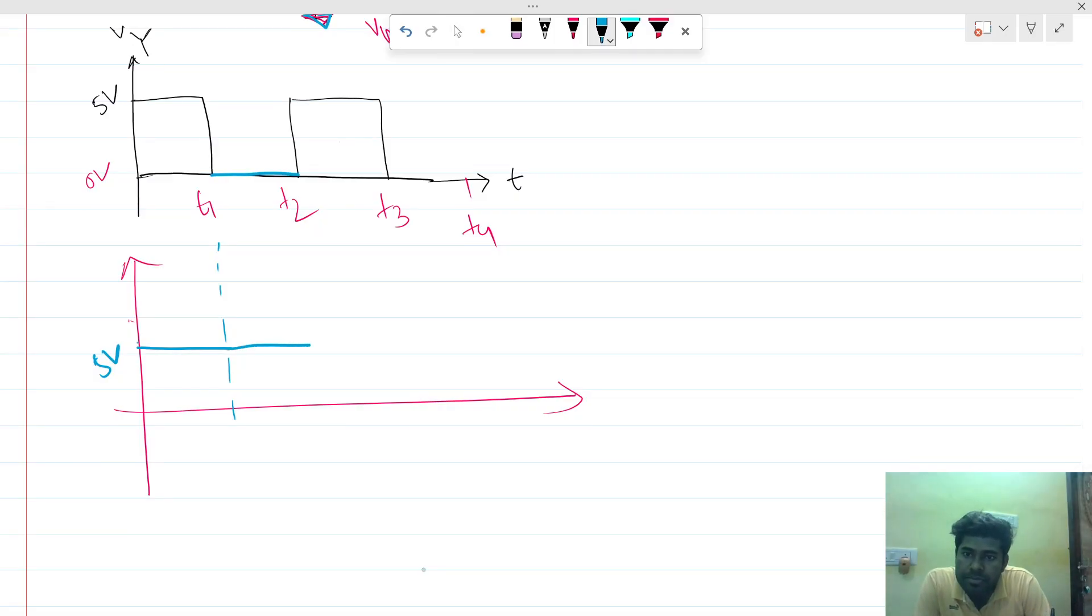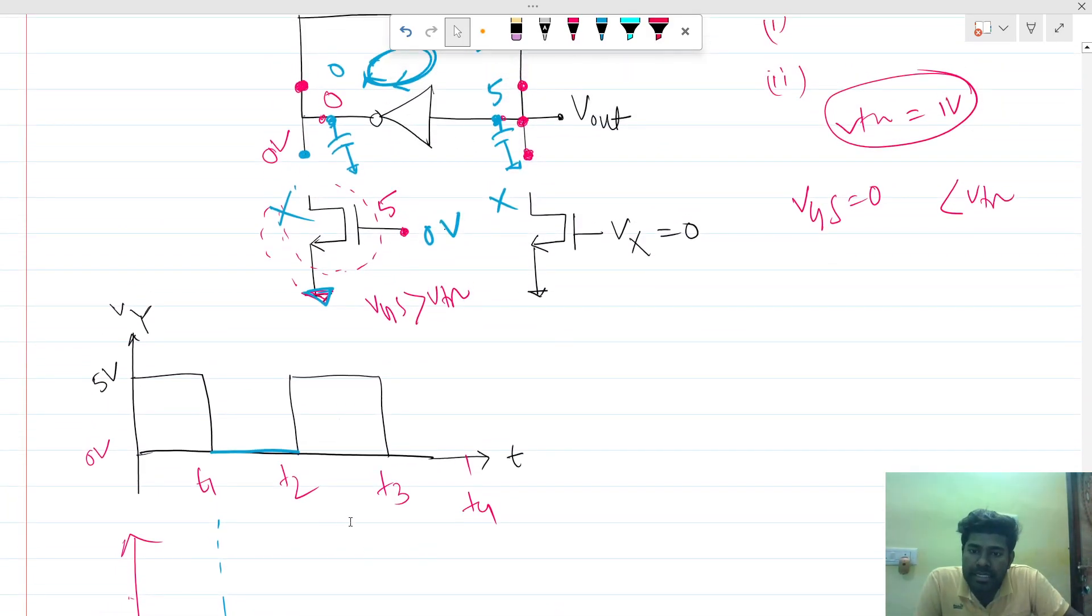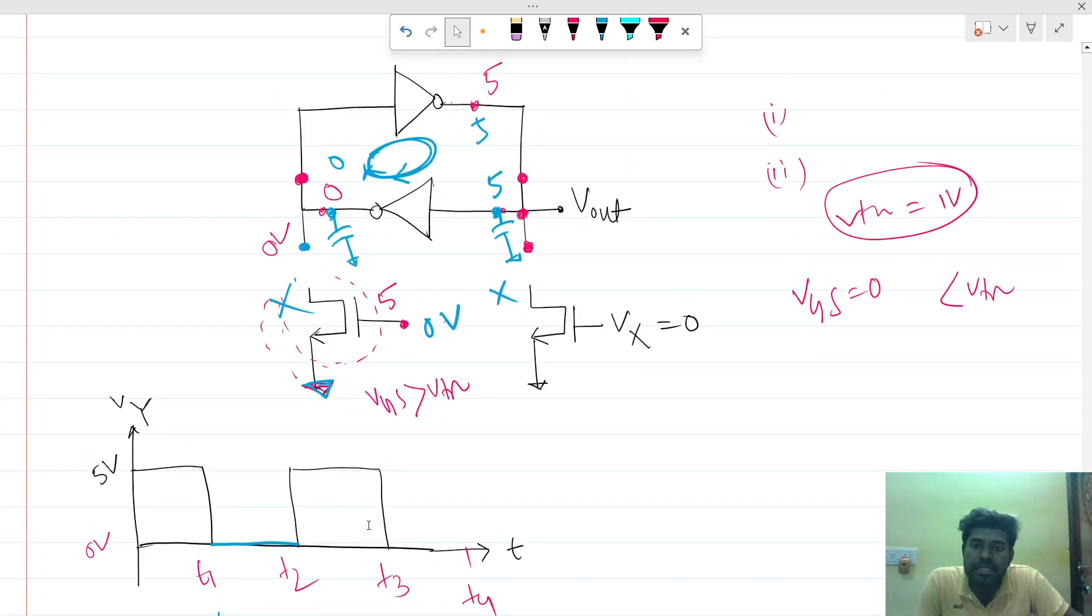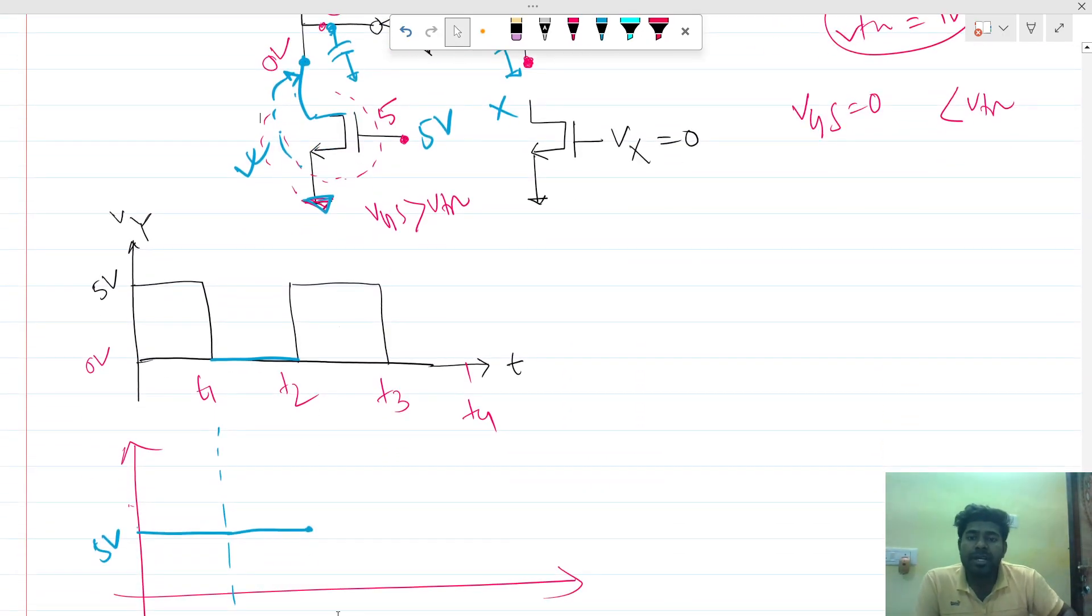At t greater than t2 and less than t3, again VY is 5 volts. So again this MOSFET will conduct and this zero volt will reach there. Eventually the same thing will happen, so this will always give a logic high at the output.